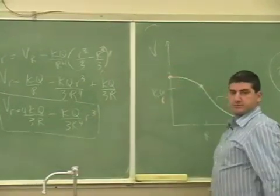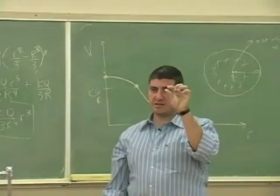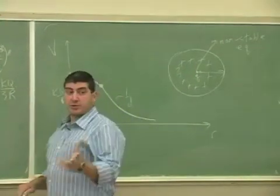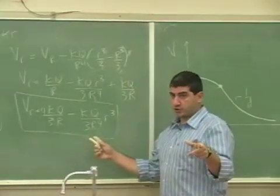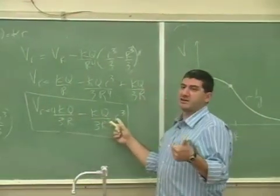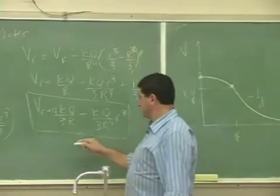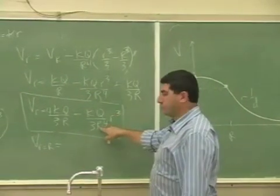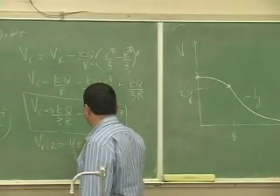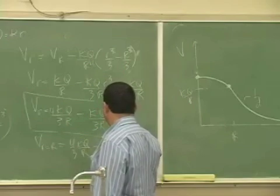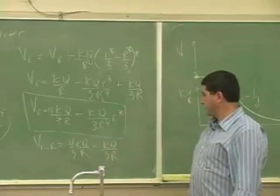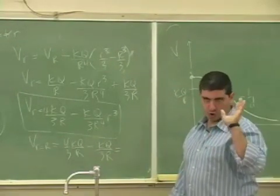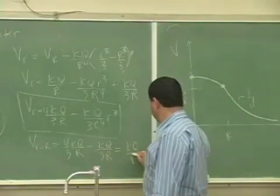If you put a charge at the center and displace it a little bit, it won't go out quite as fast — a little bit less. One thing to check: when you get this answer, you should verify it by substituting little r equals big R. Big R³ over R⁴ — the r's cancel — leaving 3R in the denominator. So you get kq over R, which is correct. When r equals R at the surface, the potential should always equal kq over R.